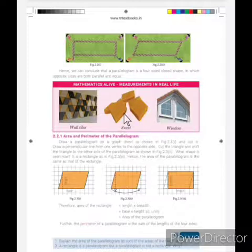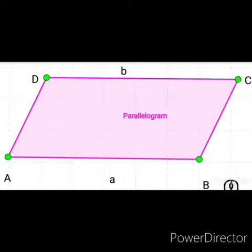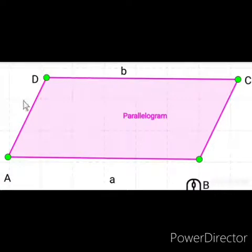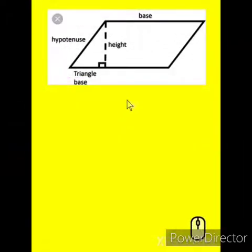Now we are going to see how to find the area and perimeter of the parallelogram. To find the perimeter of a parallelogram, we should add the four side lengths — that is AB, BC, CD, and DA. So the formula for perimeter of a parallelogram is A plus B plus C plus D.